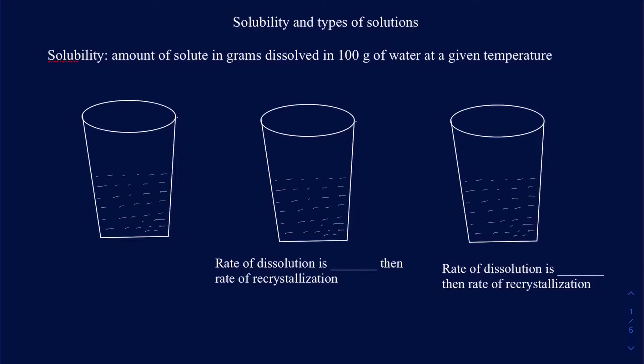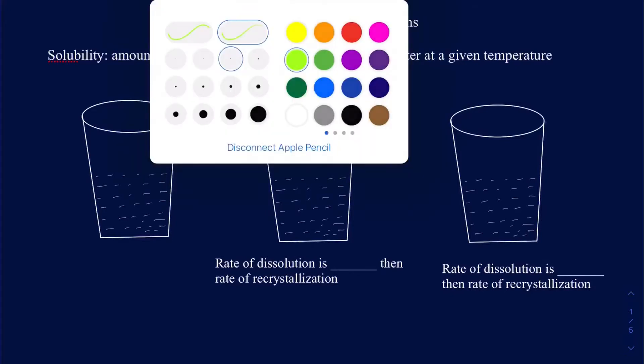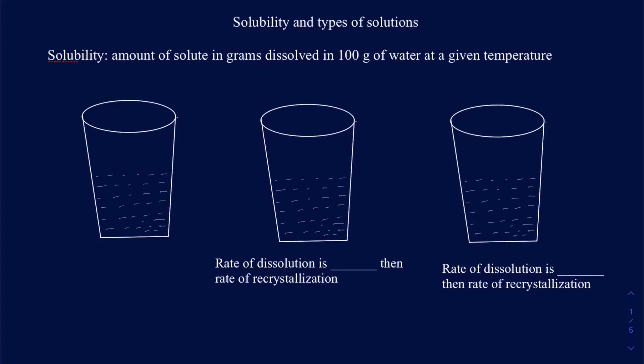In this video we're going to be talking about solubility and the different types of solutions based on solubility. Solubility is defined as how much solute you can dissolve in a given amount of water. We're focusing on water because that's your most common solvent. In general chemistry you focus on just water as your solvent.